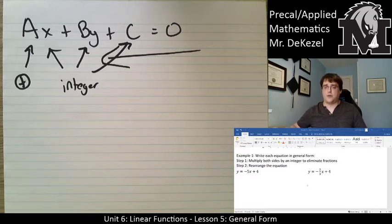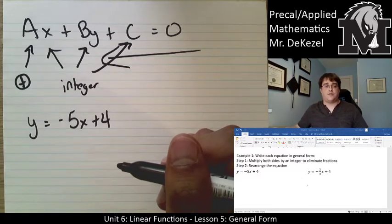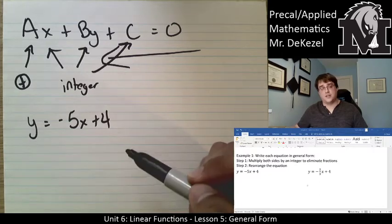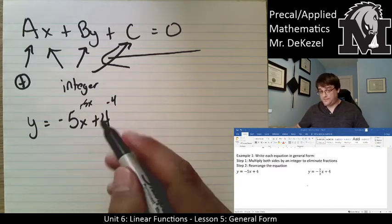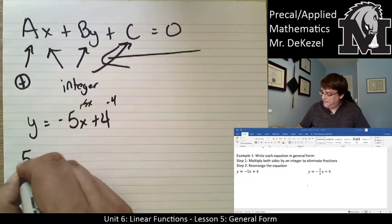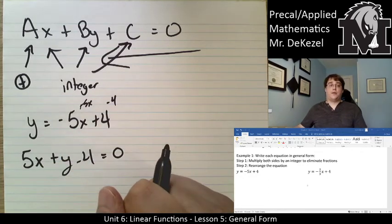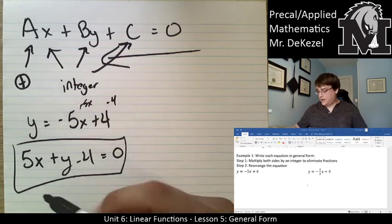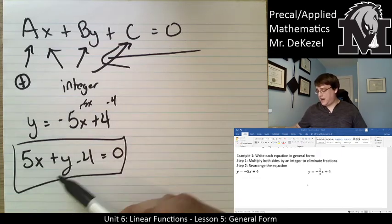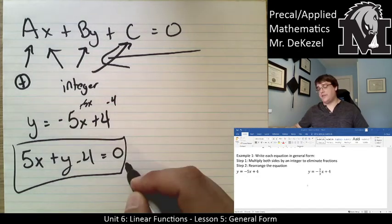First question: y = -5x + 4. I see no fractions, so I'll start pushing everything over to the left side. Adding 5x and subtracting 4 to get 0 on the right means I have 5x + y - 4 = 0. This is our final answer. A is positive, and 5, 1 (in front of y), and -4 are all integers — no decimals, no fractions.